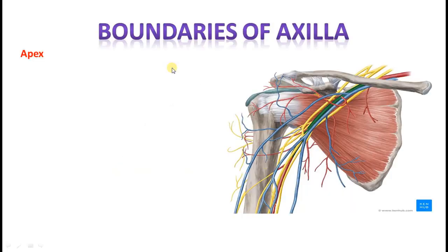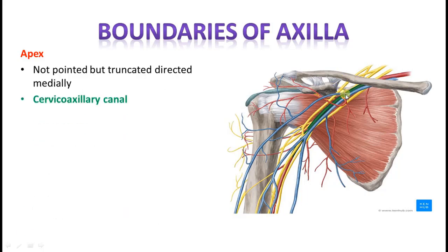Now the apex: here you are able to see this small, narrow space or canal, which is actually called as the apex and also called as the cervico-axillary canal. What do we mean by cervico-axillary canal? Above this region you have the neck, so it is the passage between your cervix — that is your neck region — and the axilla. That is why it is called the cervico-axillary canal, which allows the passage of nerves and vessels, that is your artery and vein.